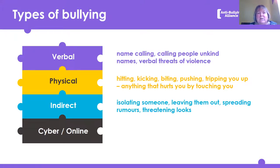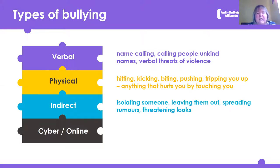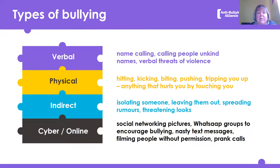Indirect bullying is one of the most difficult types to find out about because it's very sneaky. It's about leaving someone out, spreading rumours, giving someone a dirty look, or making sure they're on their own - and that can really affect you psychologically, leaving you feeling isolated. And then obviously there's cyber and online bullying: social networking pictures, WhatsApp groups, nasty text messages, filming people without permission, and prank calls.